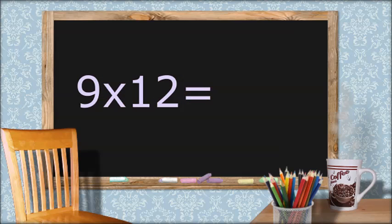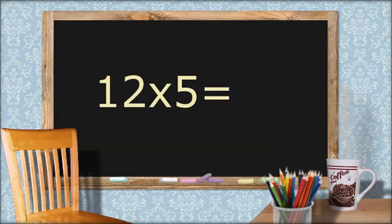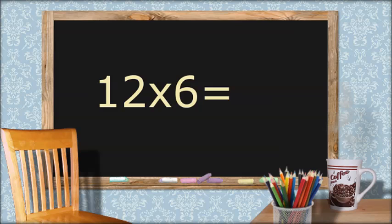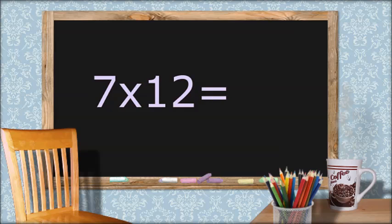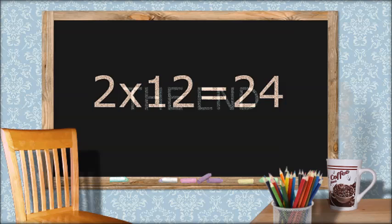9 x 12 equals... equals seventy-two. Seven times twelve equals eighty-four. Two times twelve equals twenty-four. The End.